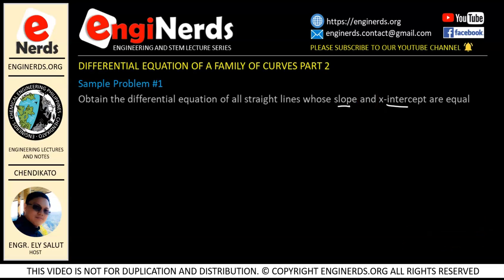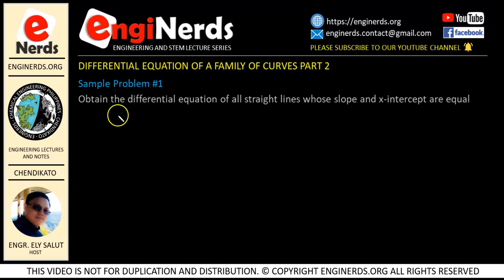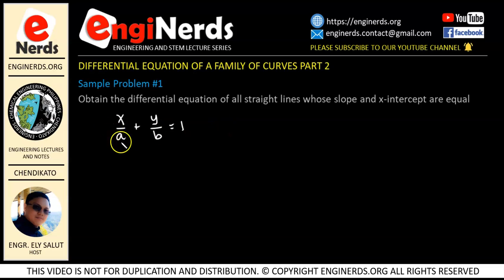As you know, there are different types of equations for straight lines. Since we are given with the x-intercept, it will just be logical to use the straight line in intercept form. We already used that in our previous video, and we know that it is x over a plus y over b is equal to 1, where a is the x-intercept and b is the y-intercept. So the first thing we need to do is take the derivative of our equation.